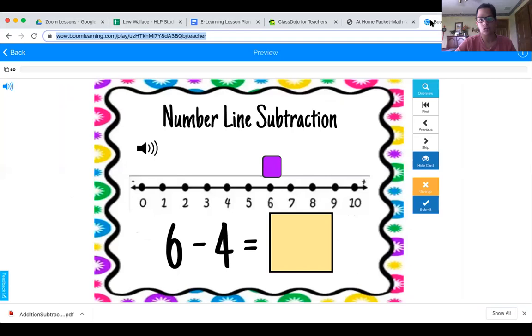Okay. So we start with six. The first number is always the number we mark first. So here's my first number and that's six. So I put a square there to help us. The second number is how many spaces I'm going to go backwards. And that is, what number is that? Yeah, it's four. Good job. So let's count four spaces back.